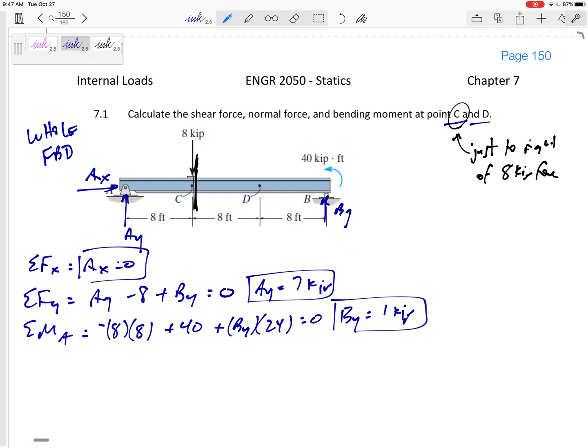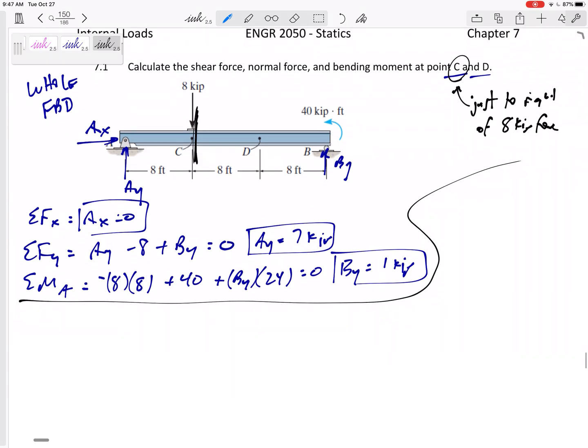But this is what we should do. We should get BY is 1 kip and then AY would be 7 kips. Alright, so I expect that you remember how to do that and I hope that you can kind of do it pretty quickly because that's not the main part of the problem. The main part of the problem is cutting it, solving for N, V, and M.